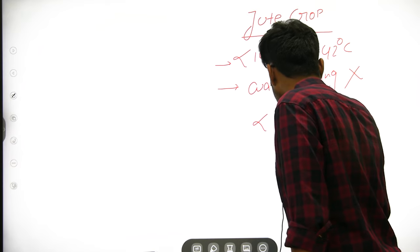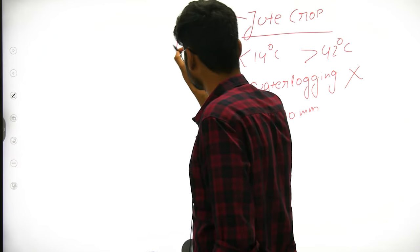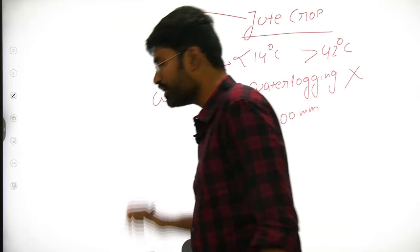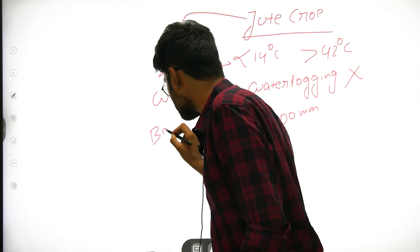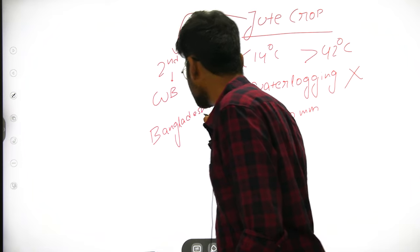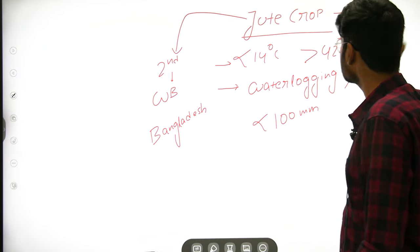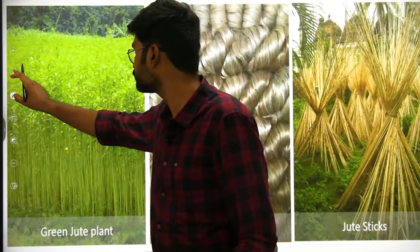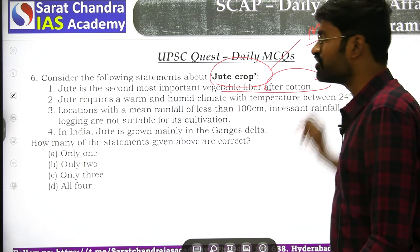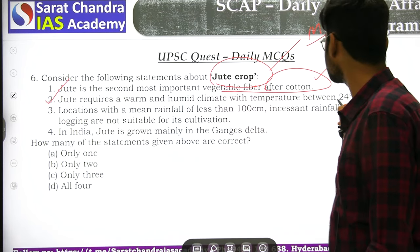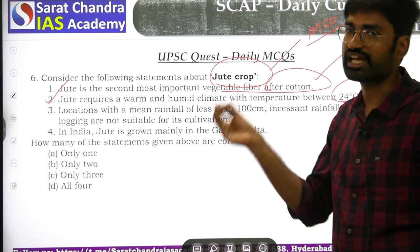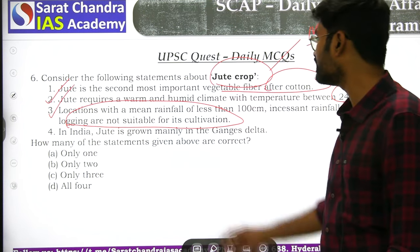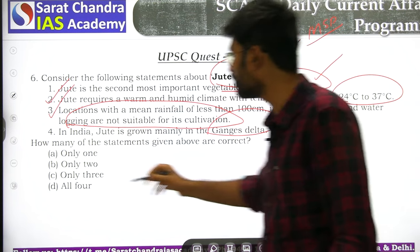India is the second largest producer of jute globally. West Bengal is the largest producer within India, accounting for 70 to 80 percent of production. Bangladesh is also a major producer. Jute is the second most important vegetable fiber after cotton, and requires a warm and humid climate with temperatures between 24 to 37 degrees Celsius. All four statements about jute are correct.